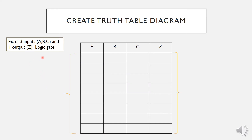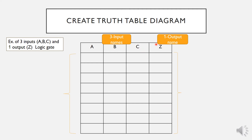Now let's have a look at how to actually create a truth table. In this example I want to give a simple demonstration of how to build a truth table for a three-input circuit with inputs A, B, and C, and one output Z. The first step is to build a table and write the three input names A, B, C in each column on the left, and on the last column on the right we write down the output name, which in this example is Z.